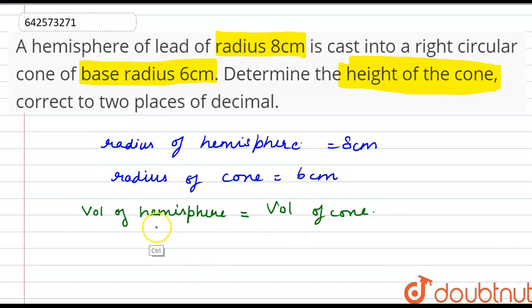And we know that the volume of the hemisphere is 2 by 3 pi r cube and the volume of cone is 1 by 3 pi r square h. So now if we put the value of r and h here,